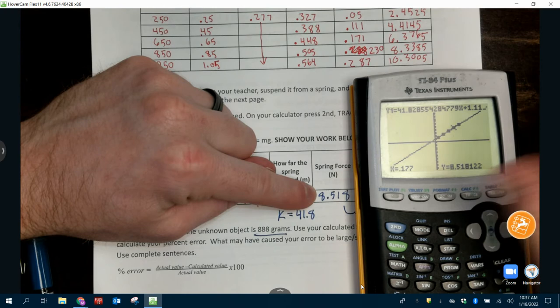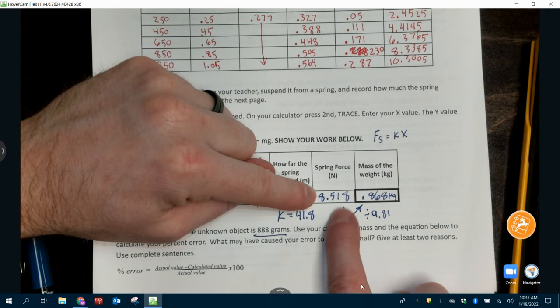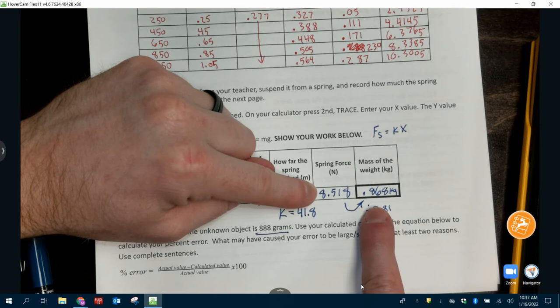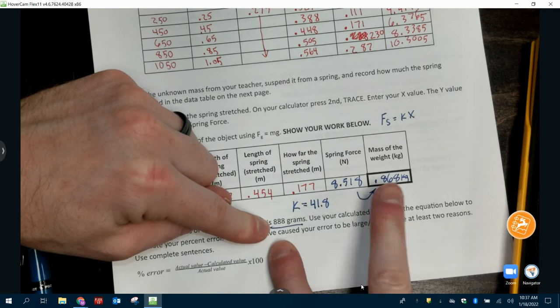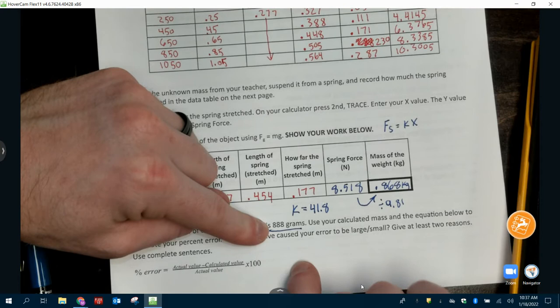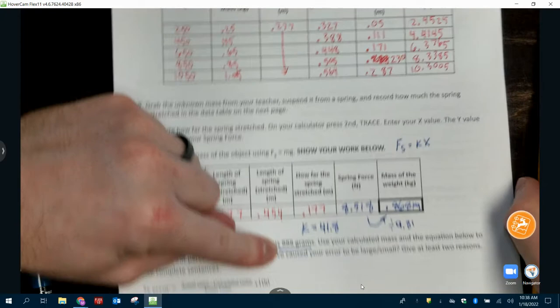Again, your number should be a little different or probably different. And then in order to get the mass, all we do is we divide this number by 9.81. I got 0.868 kilograms. The actual mass, when I measured it, was 888 grams or 0.888 kilograms. So I'm very close. You'll use that to get your percent error here. Questions? Okay. I'm going to repeat the whole process one more time.